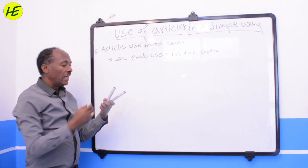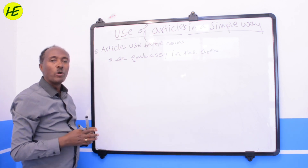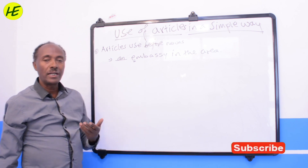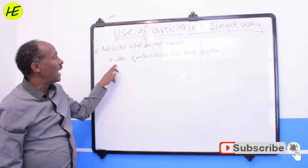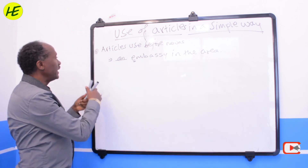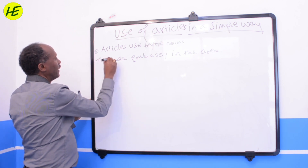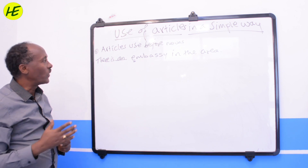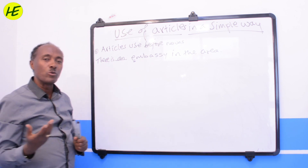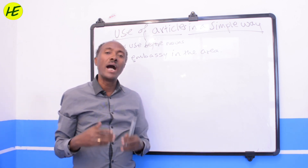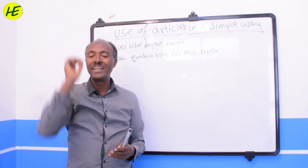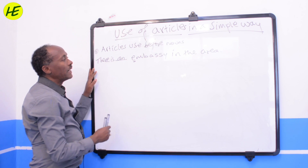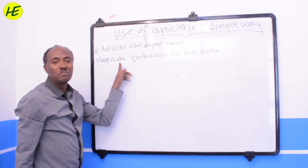The consonant rule matters here. 'An embassy' uses 'an' because 'embassy' begins with a vowel sound. So the correct sentence is: 'There is an embassy in the area.' This is how we complete a sentence — it is easy to learn in chunks.